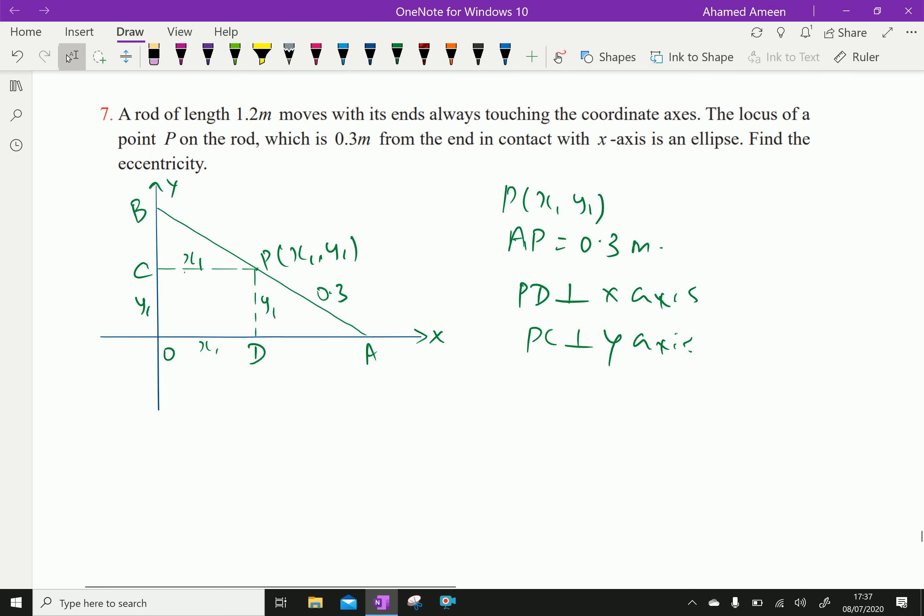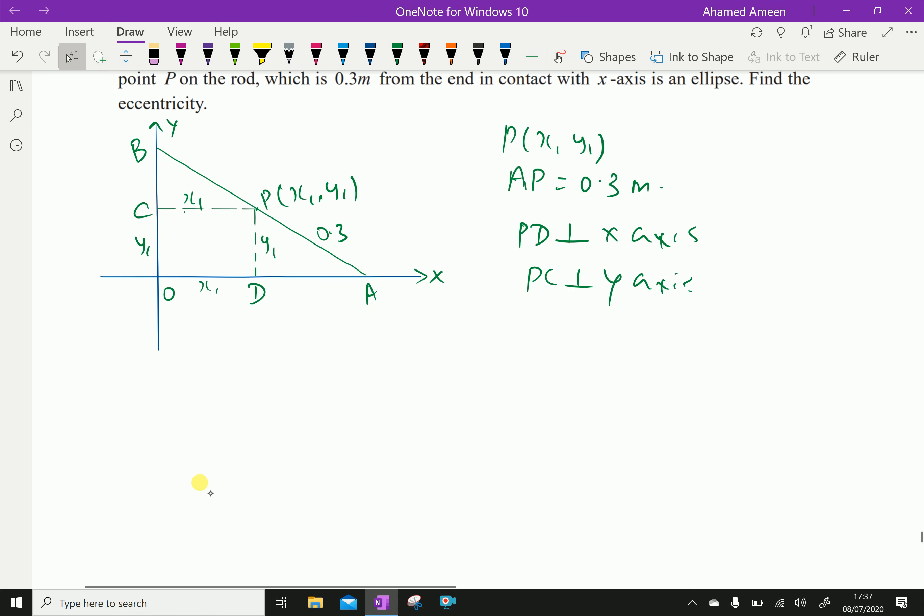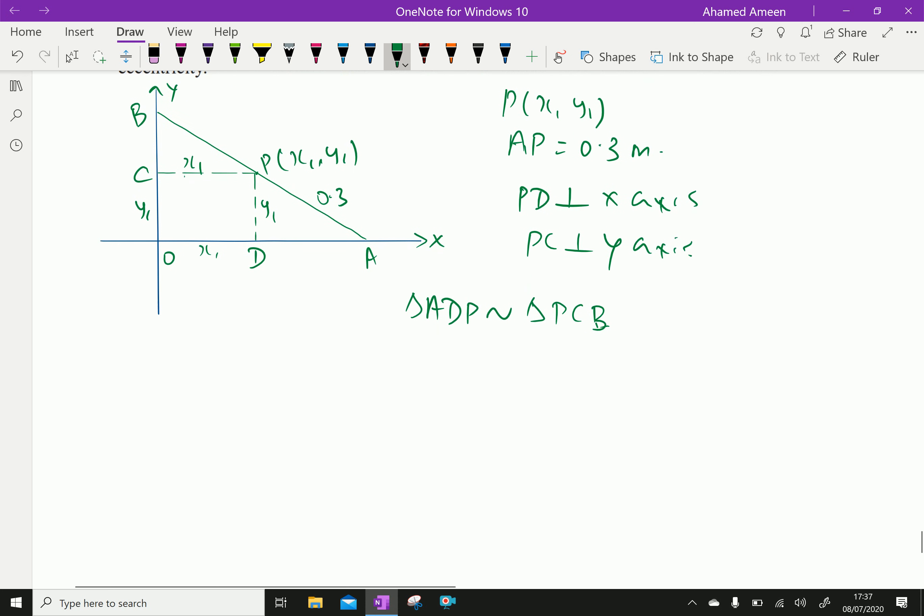In here, the triangle ADP and PCB are similar. Triangle ADP is similar to triangle PCB. Now, from that similar triangle we can write PC over DA equal PB over PA equal BC over PD.